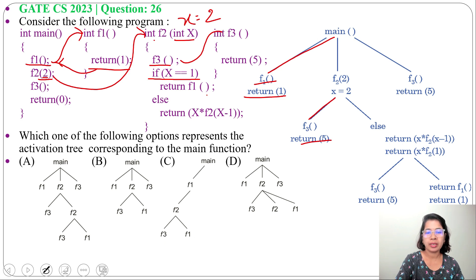X is not equals to 1, so we will execute the else part. Return X, F2, X minus 1. So this is 2, F2, 2 minus 1. Means this will be 1. 2, F2, 1. So again we will call this F2 function.